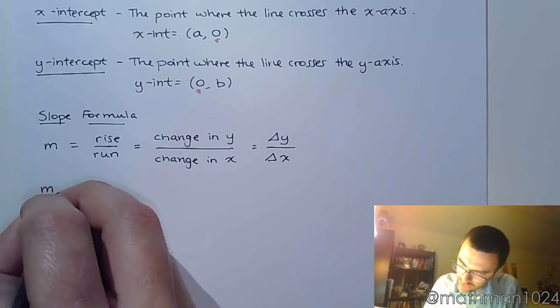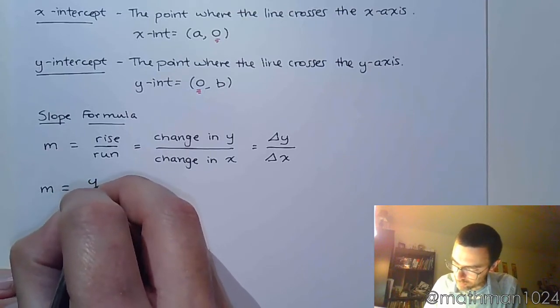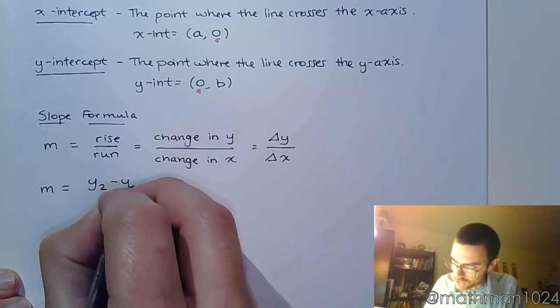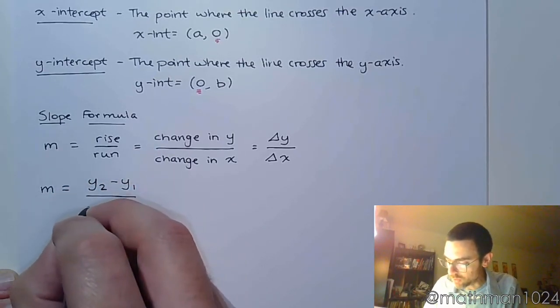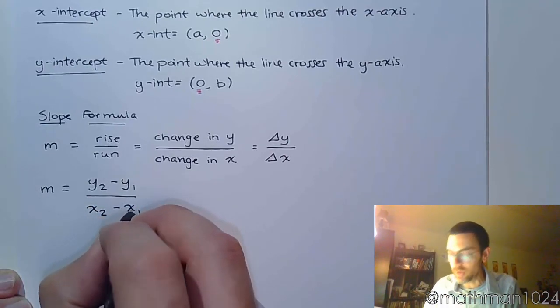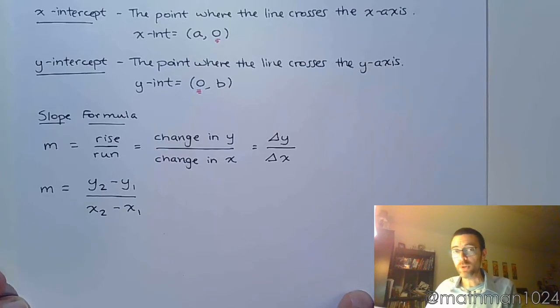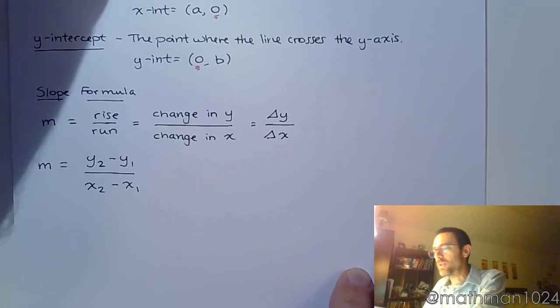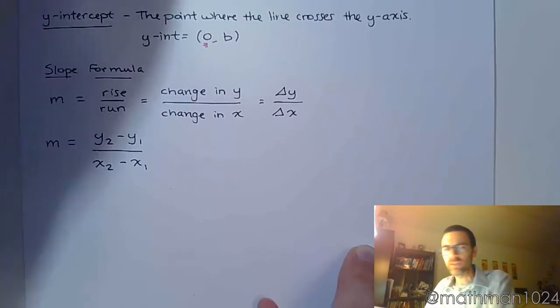But here is your slope formula: the change in y, so that's subtraction, y2 minus y1 over x2 minus x1. So we're going to be using that later on when we're trying to write equations of lines and just trying to calculate the slope in general.